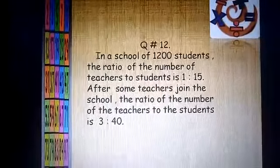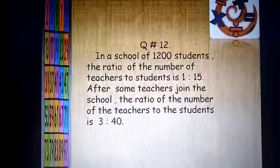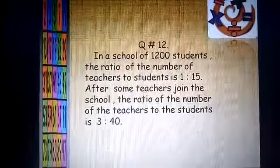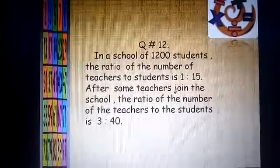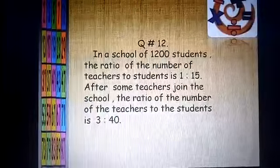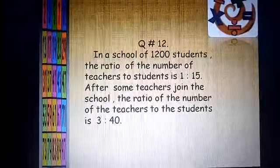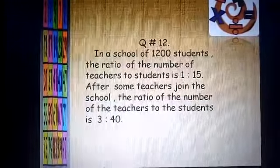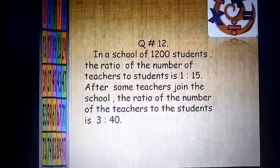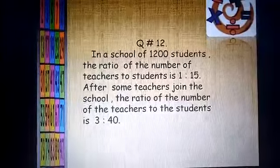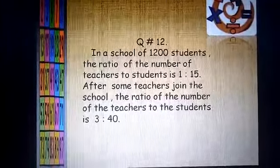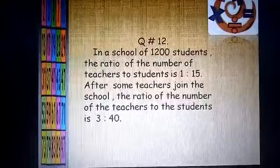In a school of 1200 students, the number of students are 1200. The ratio of the number of teachers to students is 1:15. After some teachers join the school, the ratio of the number of teachers to students is 3:40.